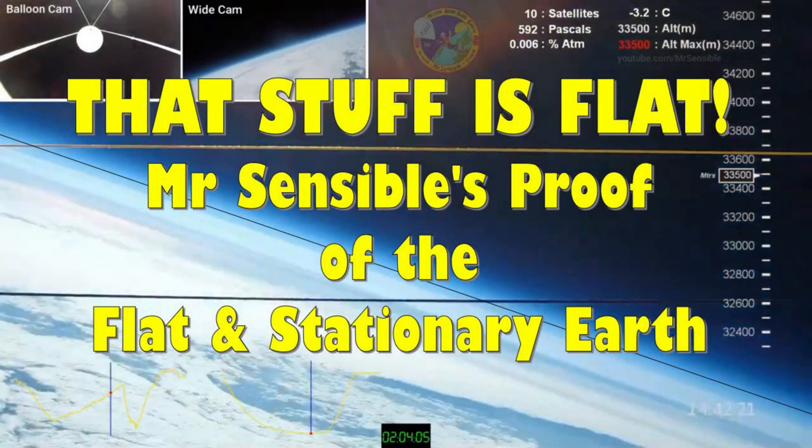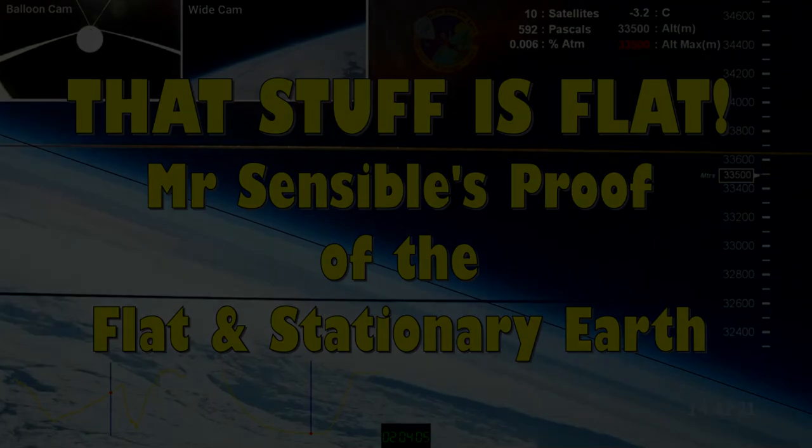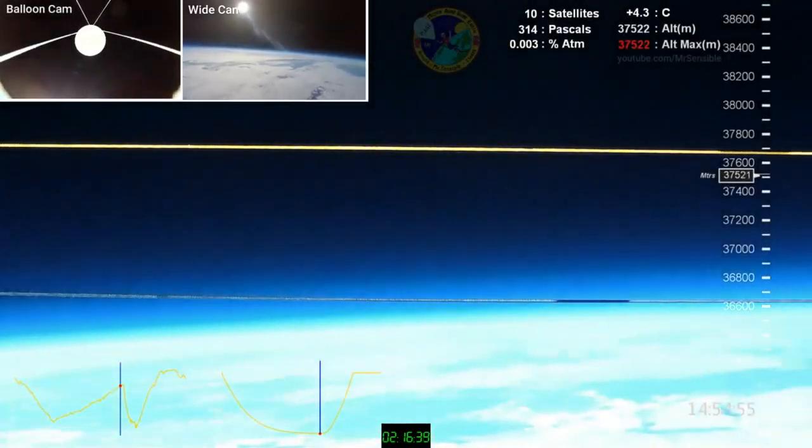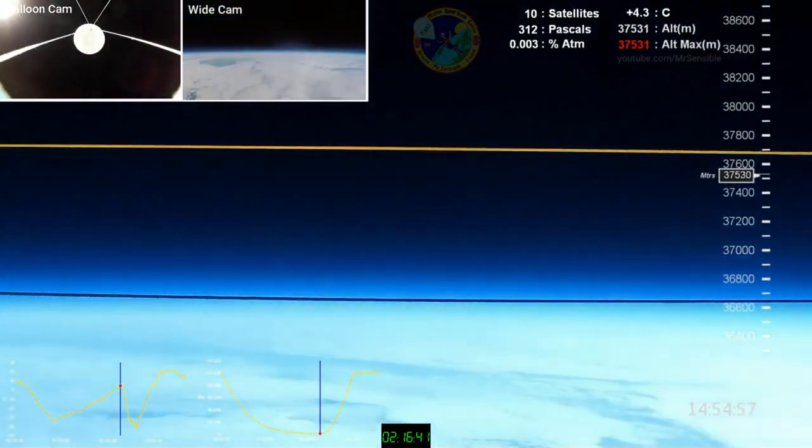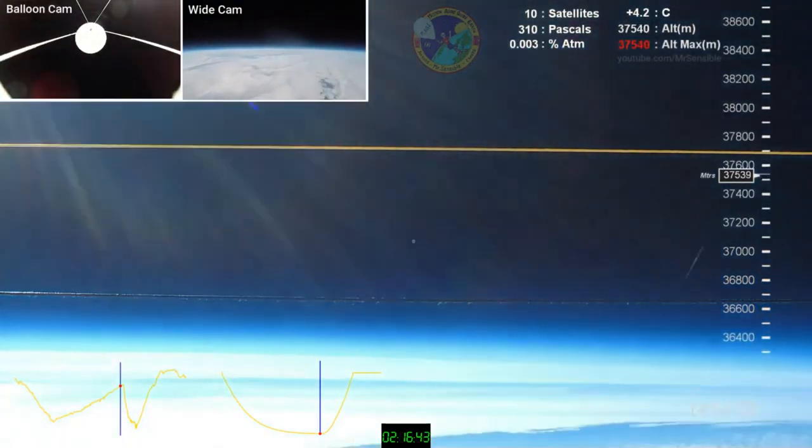Hello everyone. The point of this video will be to address one of the newest claims from the globe propagandists that YouTuber Mr. Sensible was able to film the supposed curvature of the earth with a high-altitude balloon at 127,000 feet.